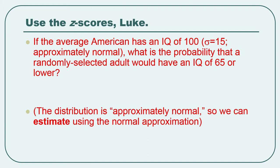Later we'll talk about how to determine how normal is normal, but at least for problems where we're just practicing z-scores and using the table, if I say approximately normal, that means go use the table, use these z-scores, do this process. So what's the probability a randomly selected adult would have an IQ of 65 or lower? So I said it's normal, so we can use the normal approximation.